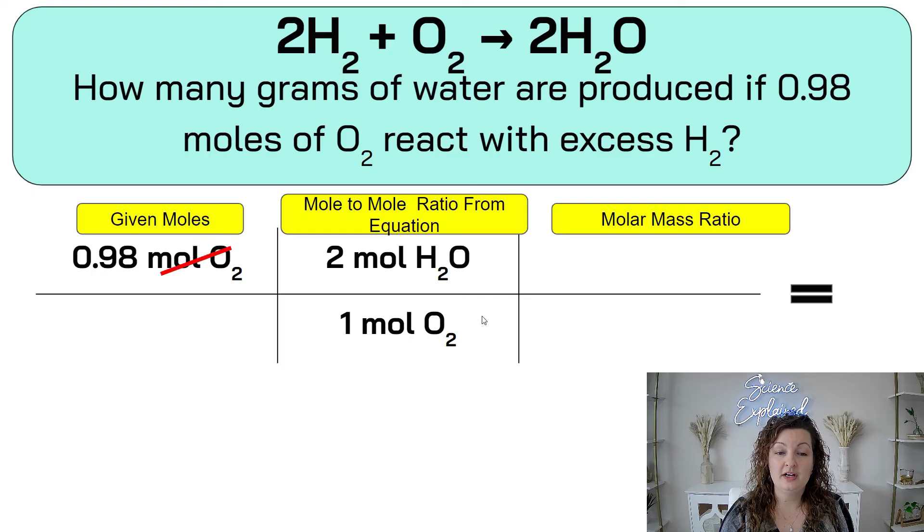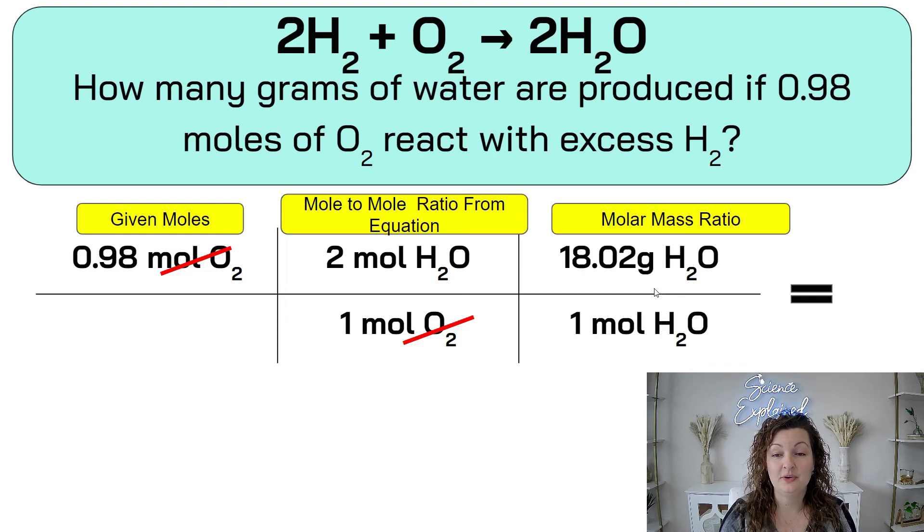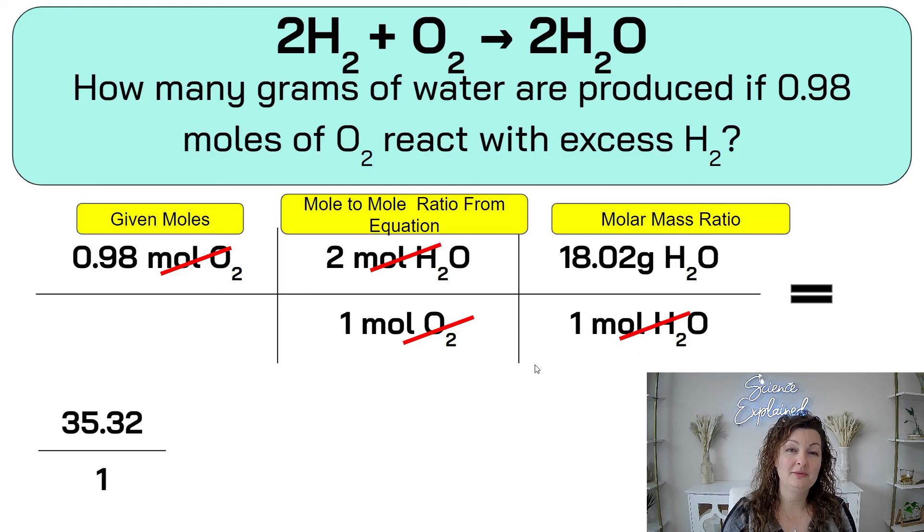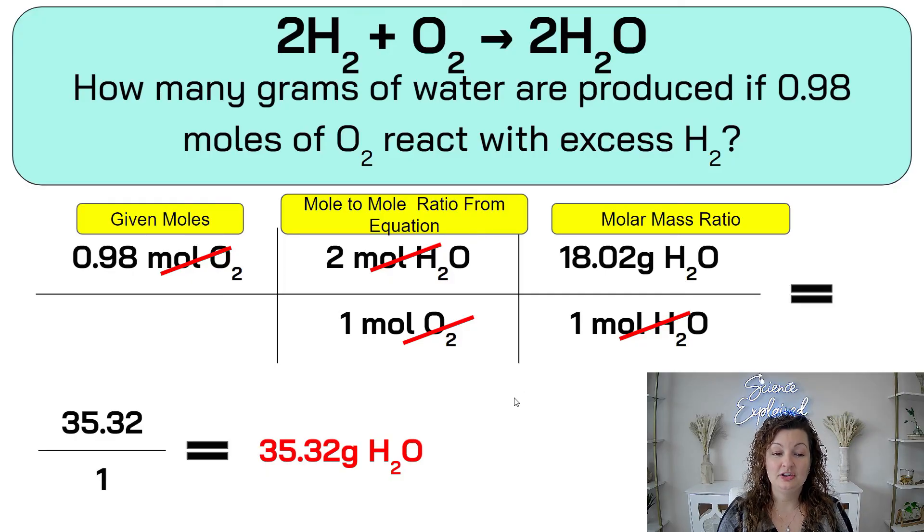So we can cross off our units that are diagonal and down from each other. Diagonal and down again have to be the same. Moles of H2O, so moles of H2O are going to be on the bottom. It's going to be one of those. One mole of H2O is equivalent to the grams of H2O, and you go look for that on the periodic table to find the molar mass, and we just did that earlier in the example and found that it was 18.02 grams of H2O. Cancel out those units, multiply the top, multiply the bottom, and then divide, and you end up getting 35.32 grams of H2O.